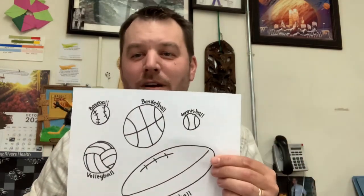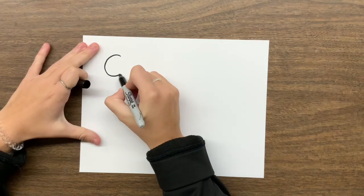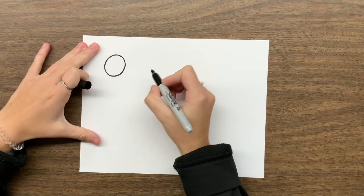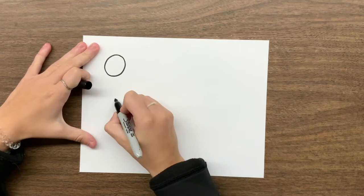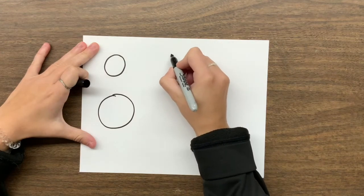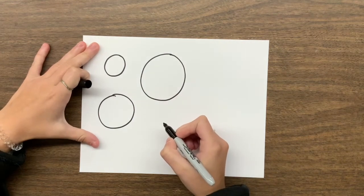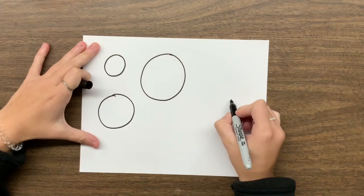Alright guys, here we are. First we're going to start by drawing circles for our balls. Start with one, then draw the next one, make it a little bit bigger, then make the next one even bigger. Then we come back and say, alright, I think this one looks more like this kind of ball, this looks like that kind of ball.